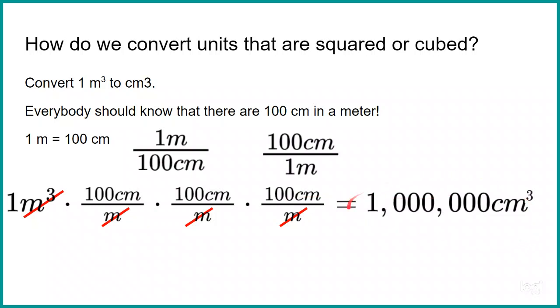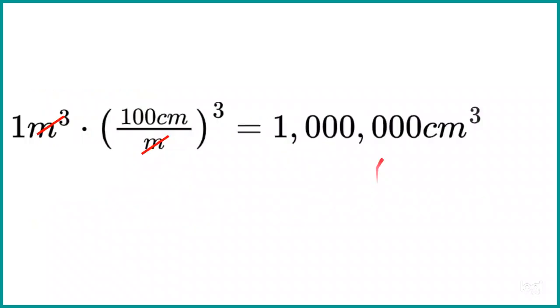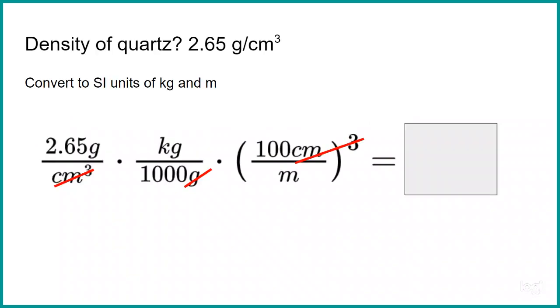And so we are going to be left with one times 100 times 100 times 100. That's six zeros. So in other words, one million centimeters. There are one million centimeters in one cubic meter. There are not 100 cubic centimeters in a cubic meter. There are a million cubic centimeters in a cubic meter. We can also set it up like this, which is just a little bit quicker. One cubic meter, and then we're going to take 100 centimeters per meter, that's the conversion I remember, and we're just going to cube that. So it's the same as saying 100 times 100 times 100, and we're going to come up with a million cubic centimeters. So there is our conversion.